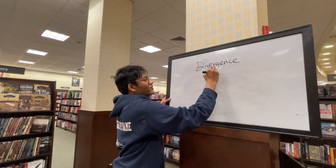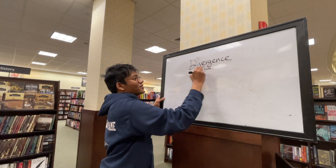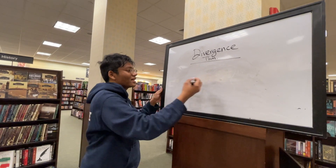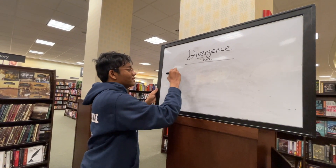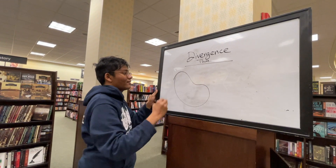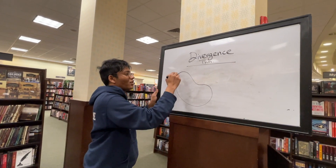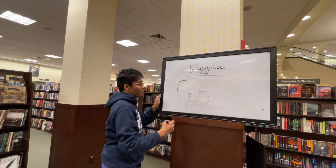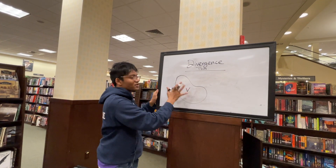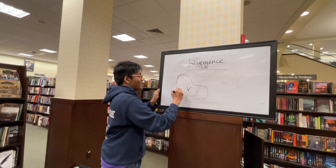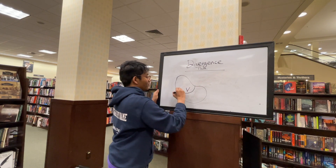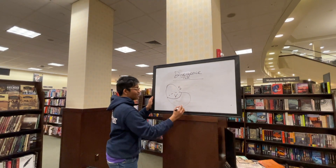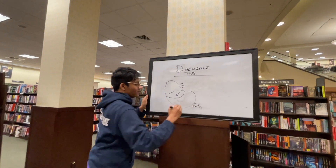So what does the divergence theorem state first of all? It says that if I have some kind of a solid — we'll call this solid V and we'll call the surface enclosed by this solid S. We'll call this surface S and we'll call the boundary enclosed by this surface delta S.